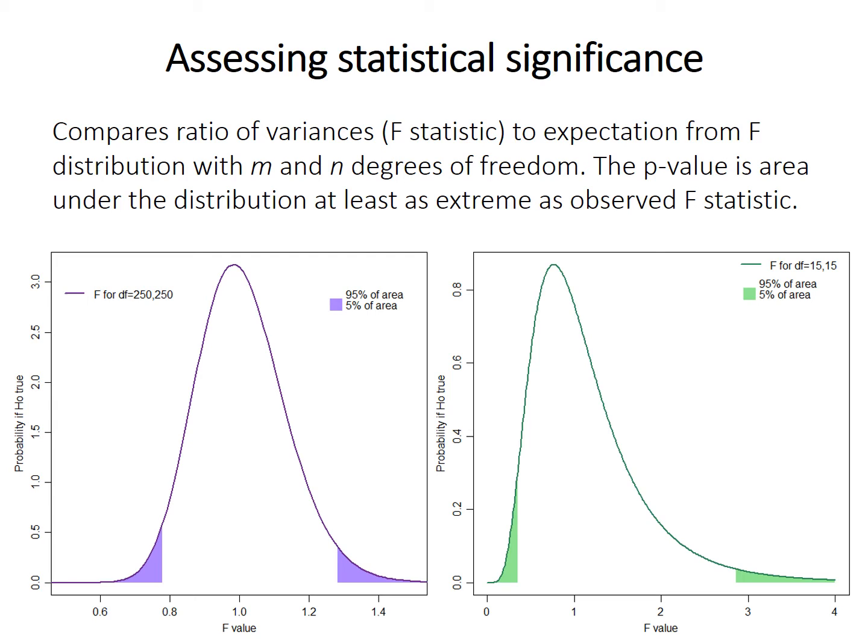Both of the distributions on the bottom are F-distributions. They show the probability of finding a particular value if the null hypothesis is true. Note that both of them have a peak at 1, indicating the most probable value for F is 1, as you'd expect if the null hypothesis was true.